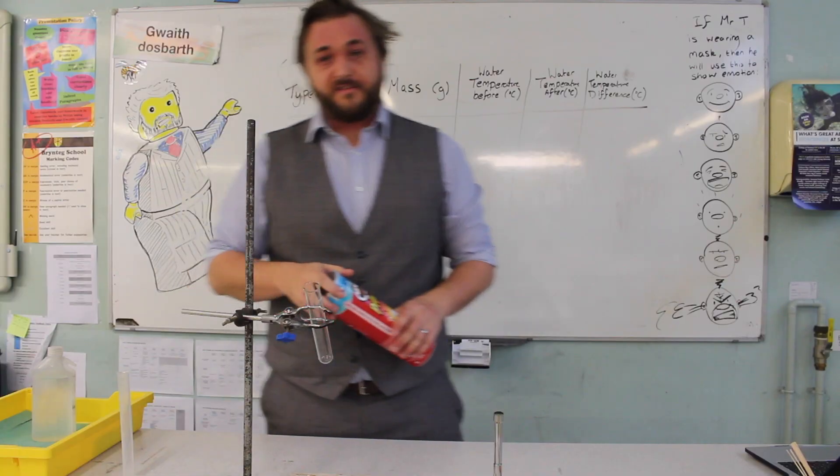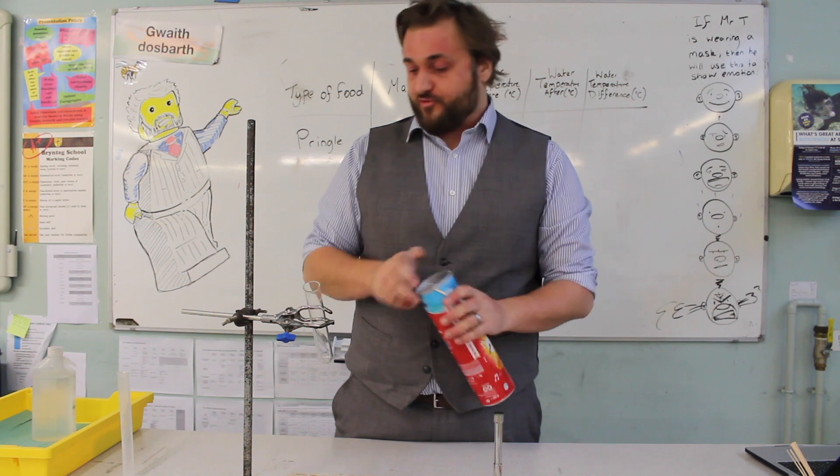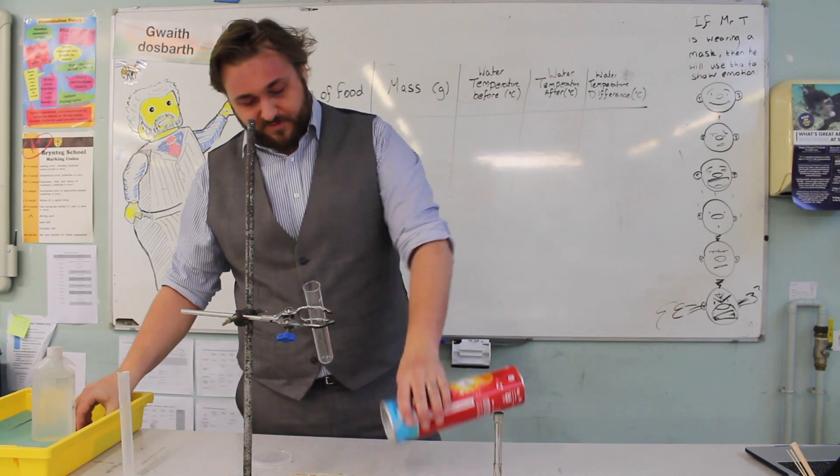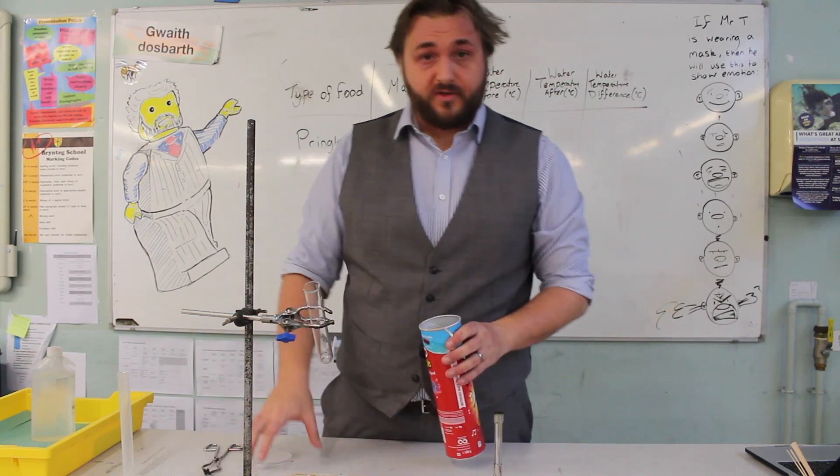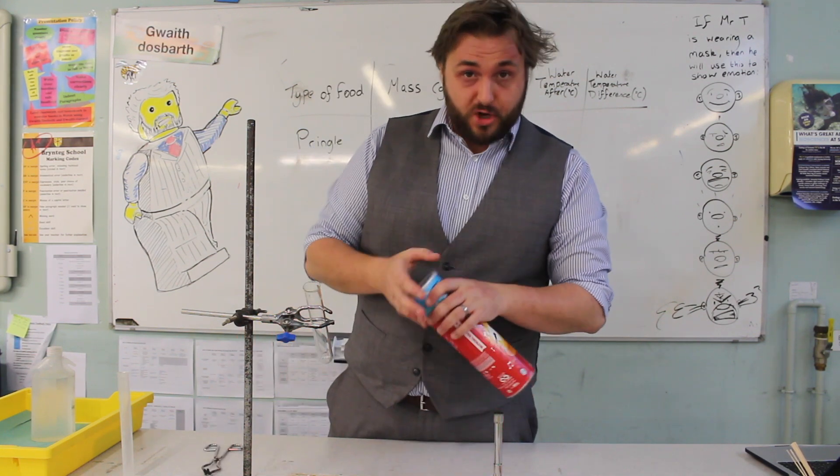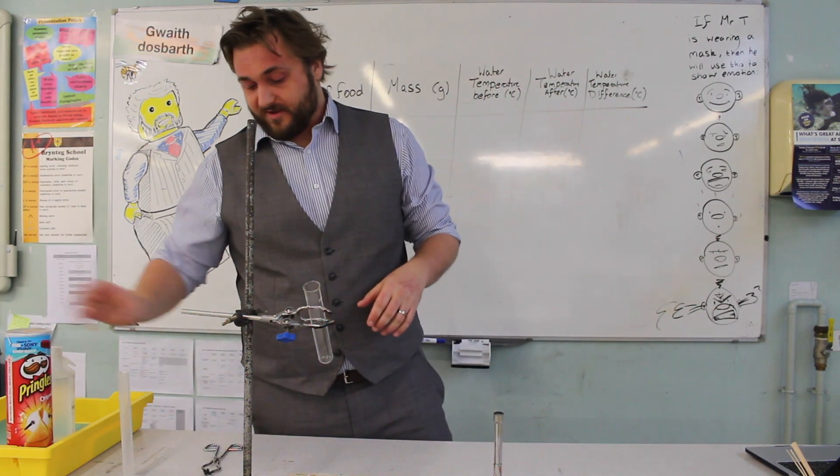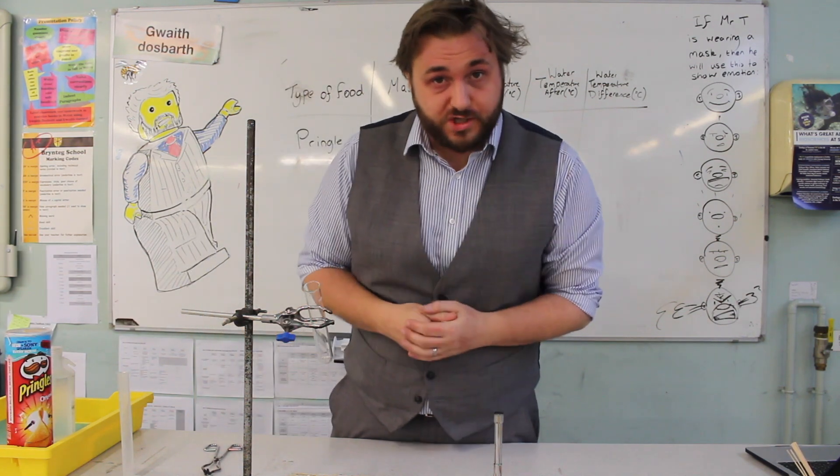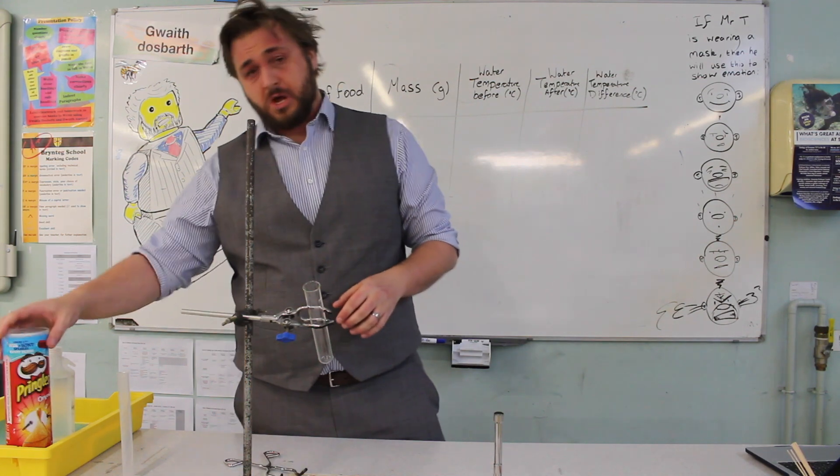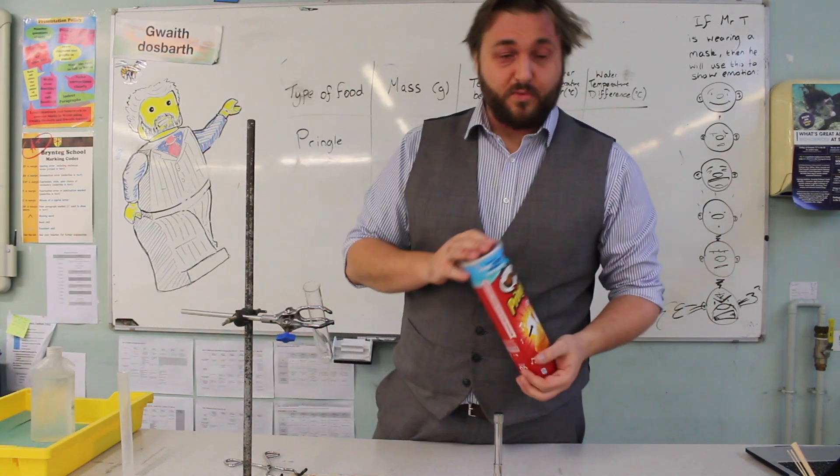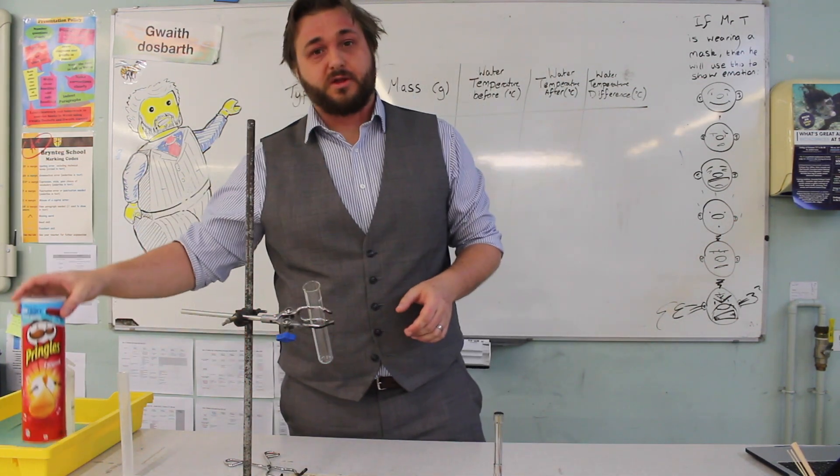Food. The food that we're going to be using is some Pringles. Generally we give out crisps or something with carbohydrate and fat because it burns better. Generally, things that contain carbohydrates and fats burn better and are better used in this experiment as a demonstration of the amount of energy that comes out of foods. Crisps are an ideal candidate. Pringles in particular, because once you pop as we all know you can't stop.